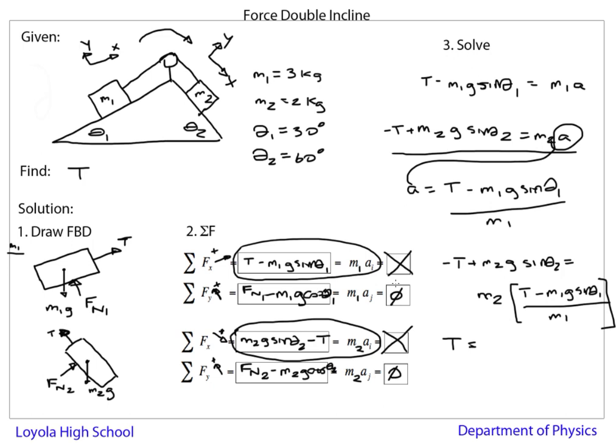If the question asked for the acceleration of the block, I could take the T and plug it back in, and I could solve for acceleration. Basically, you end up with a system of equations, two equations. That's how you solve for the tension in the double incline problem.